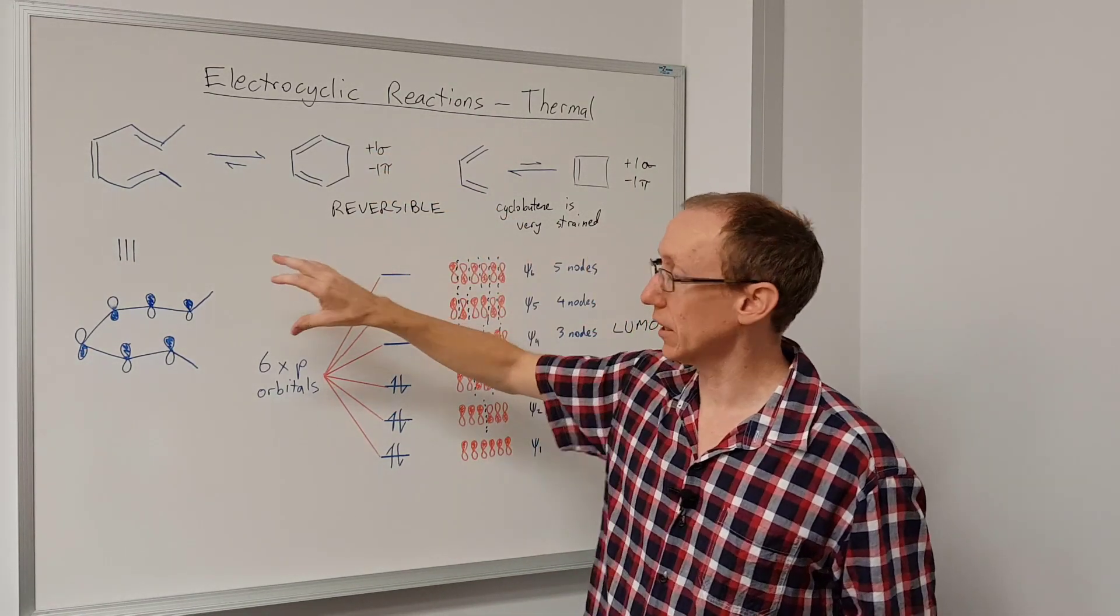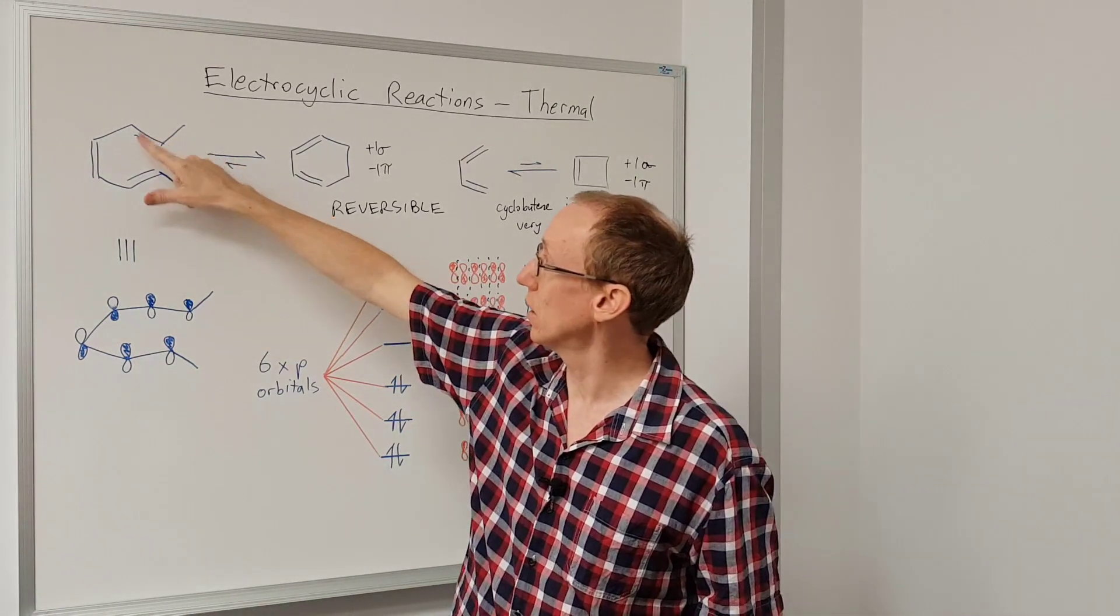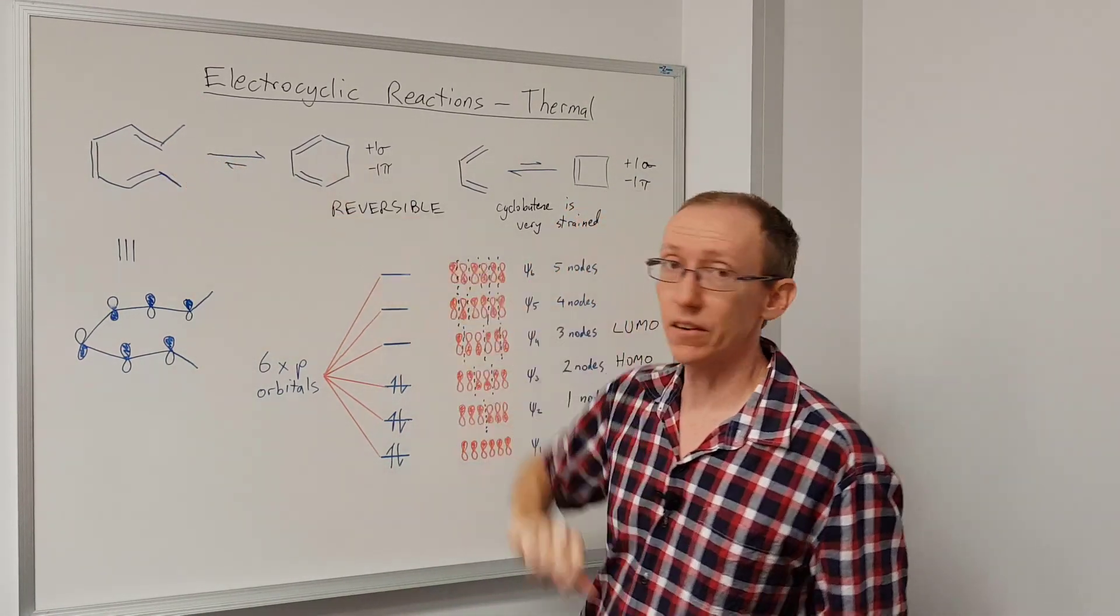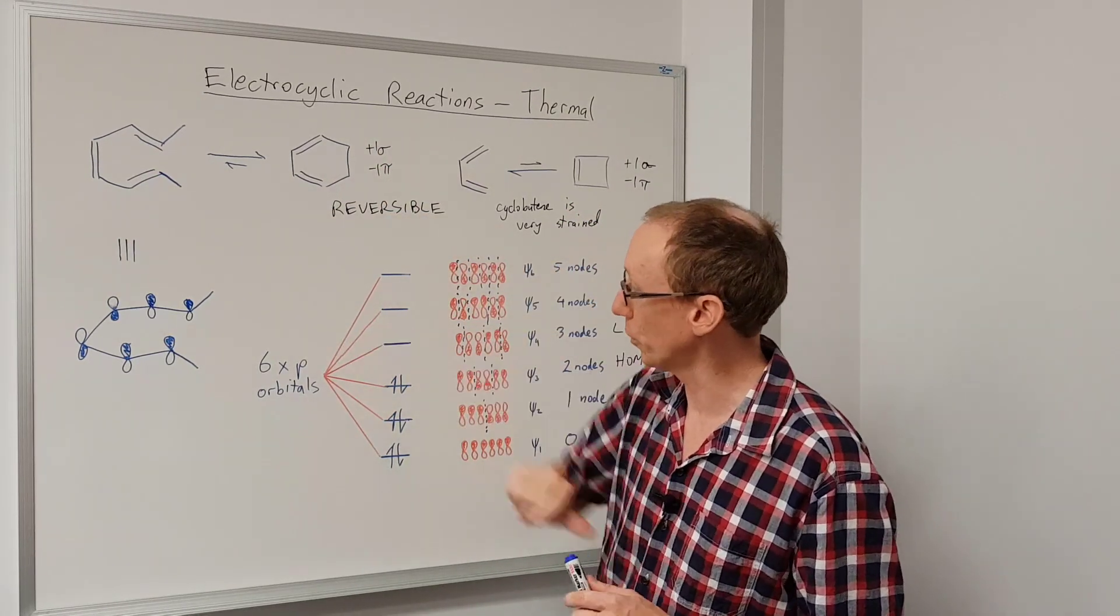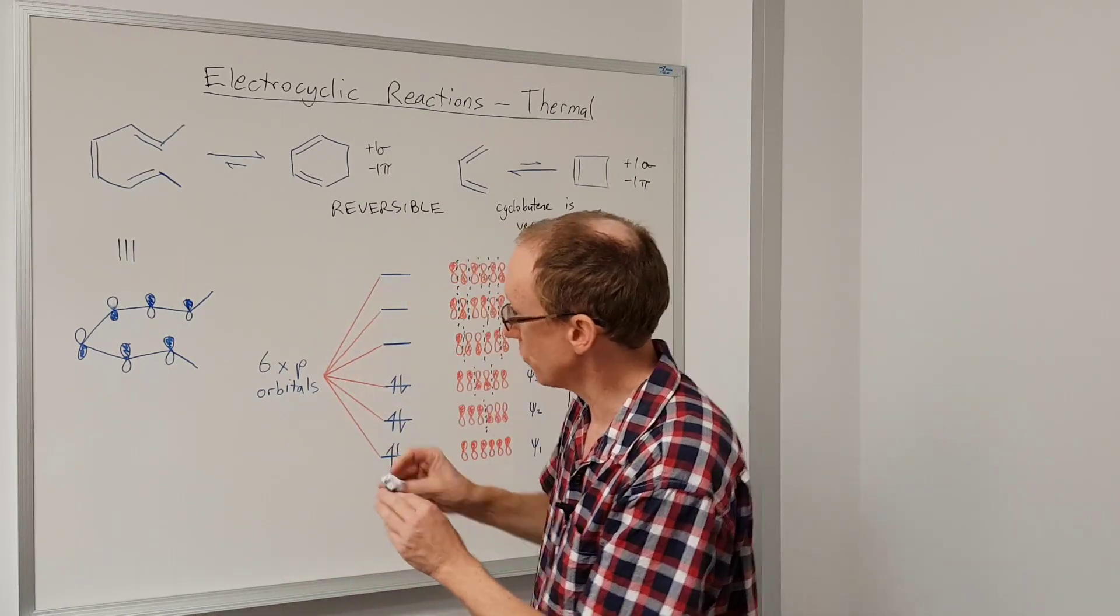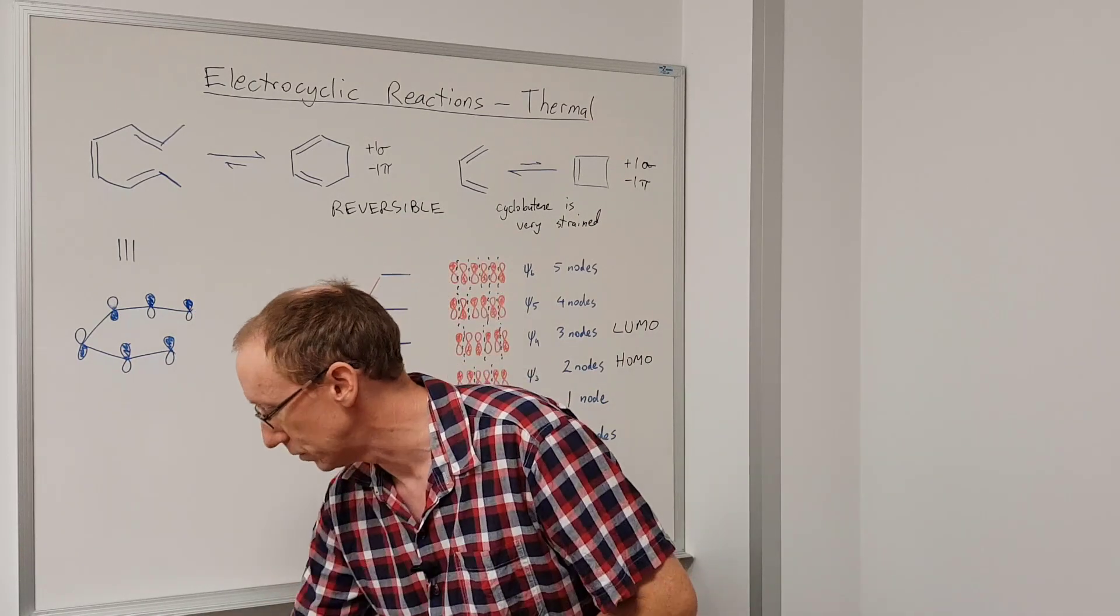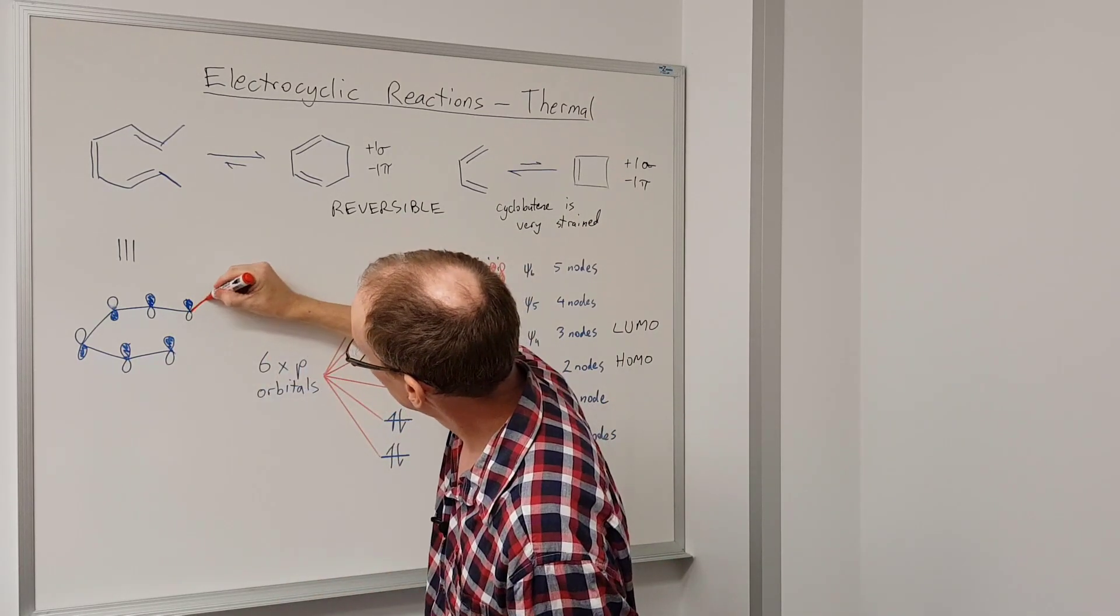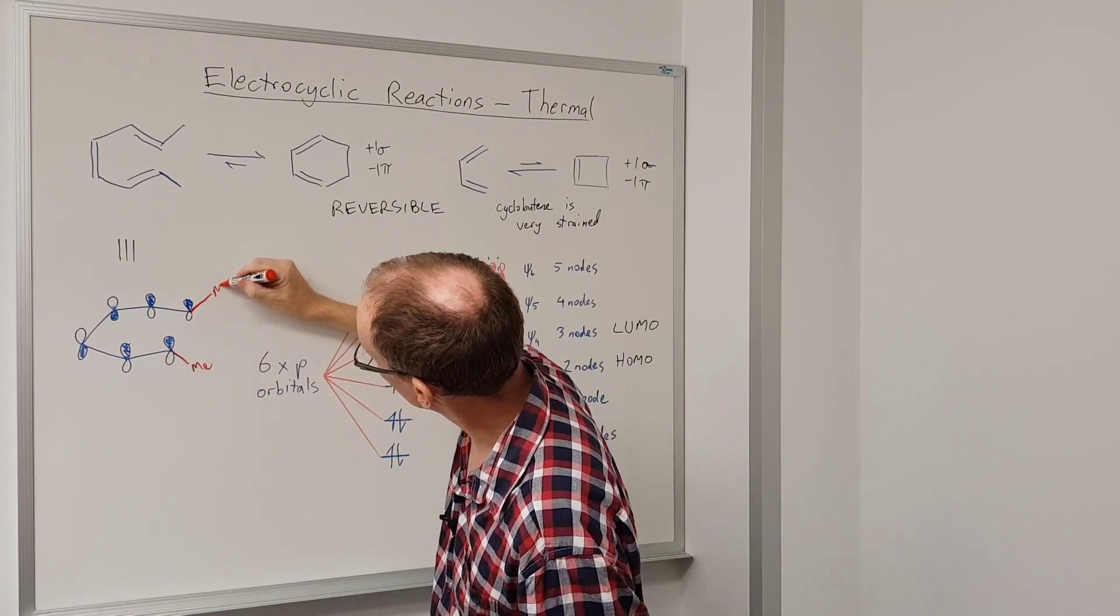So it turns out with electrocyclic reactions, there is a direct translation of the stereochemistry of these double bonds into the stereochemistry of the product. So I haven't drawn those methyls in, but I will when we've worked out which one is which. So actually what I'll do is I'll draw those methyls in red so that we can follow them more easily on a molecular model.